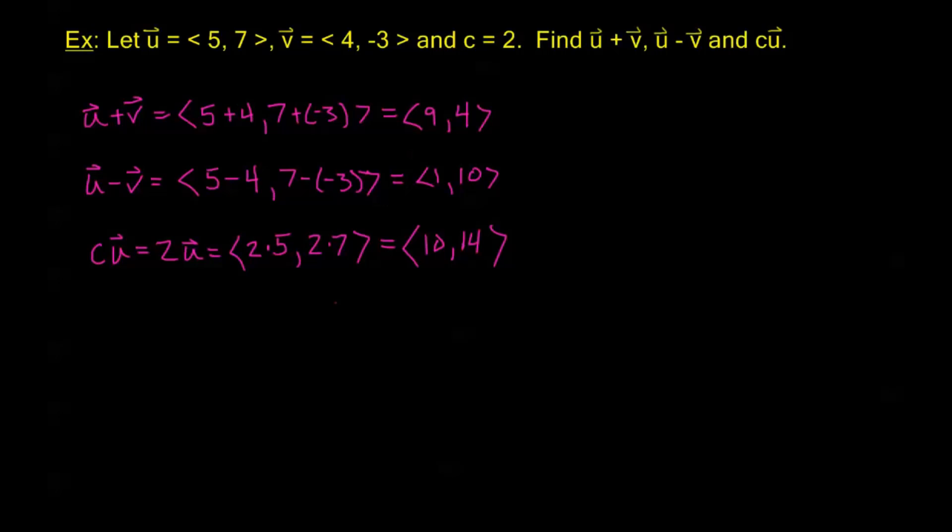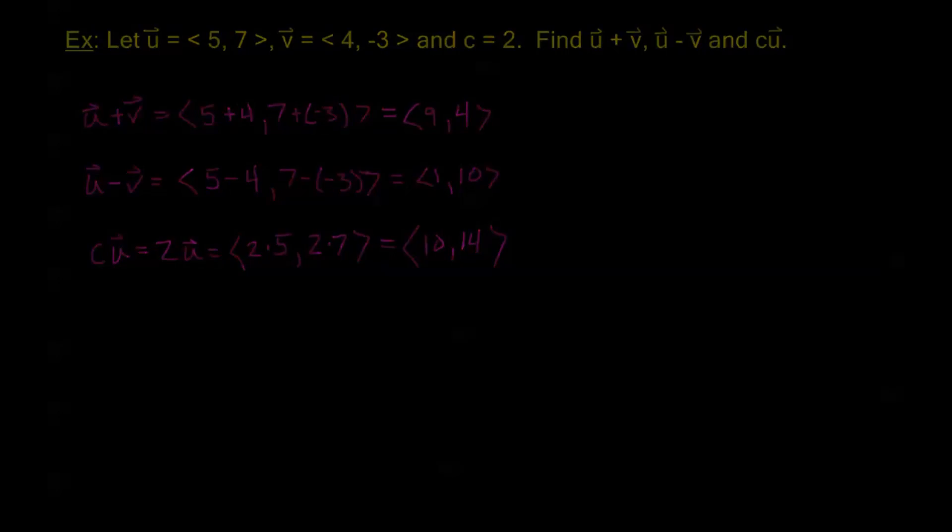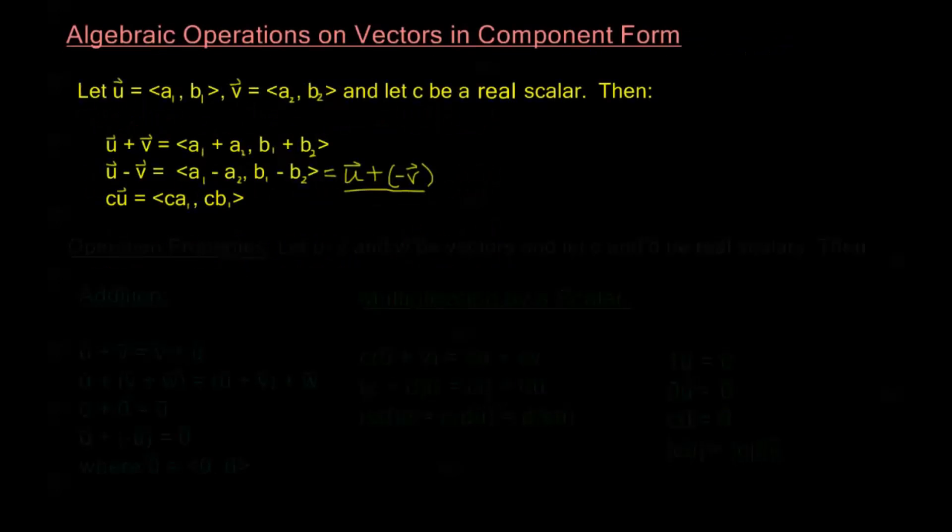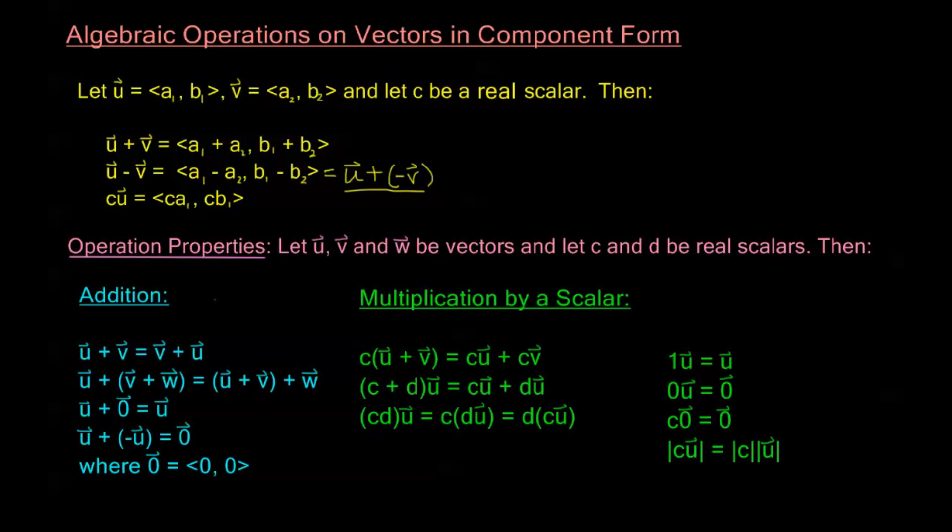Alright, now let's take a look at some properties, now that we've had a little example on how we use these operations. We have several properties for these operations. For the addition operations, and first let's let u, v, and w be vectors, and here I'm going to let c and d be real numbers, or real scalars. So for my addition operation, I have that u plus v is equal to v plus u. So this is commutative addition. It's also associative, so u + (v + w) is the same as (u + v) + w.